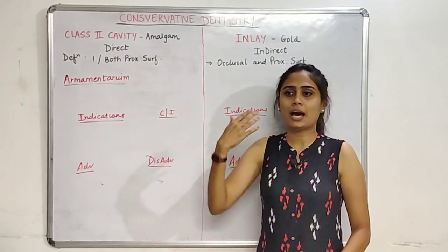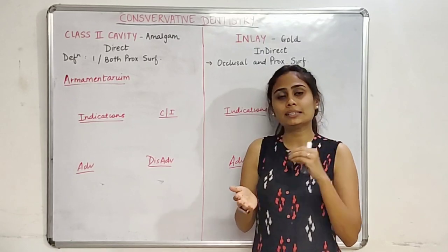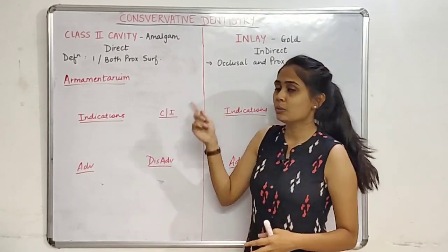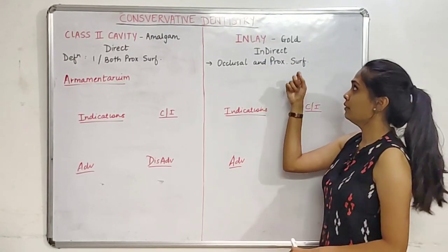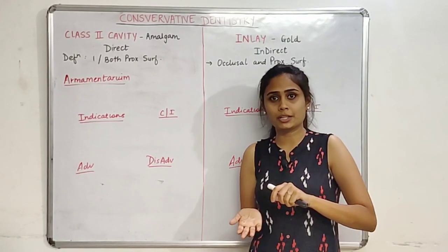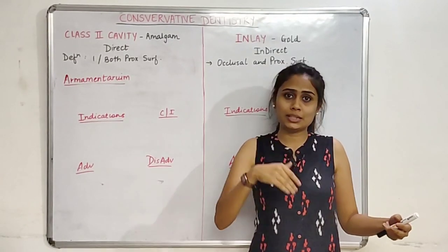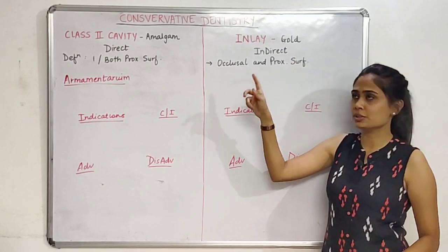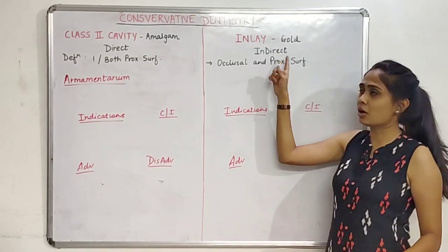For a direct restoration, we make the cavity in the patient's mouth and at the same appointment we place the amalgam restorative material and send the patient away. Whereas for the inlay cavity, we make a cavity first, take an impression, cast our gold restoration outside, call the patient next time, and then place our gold restoration. This is a multi-step procedure.